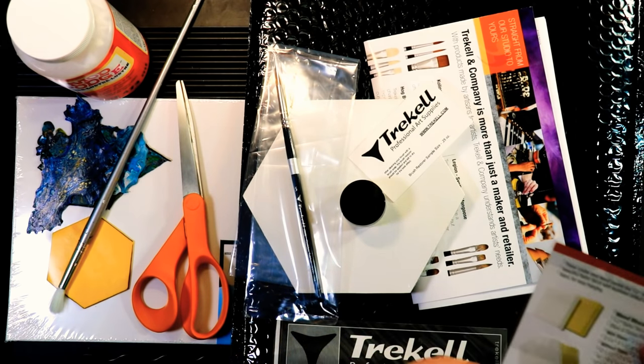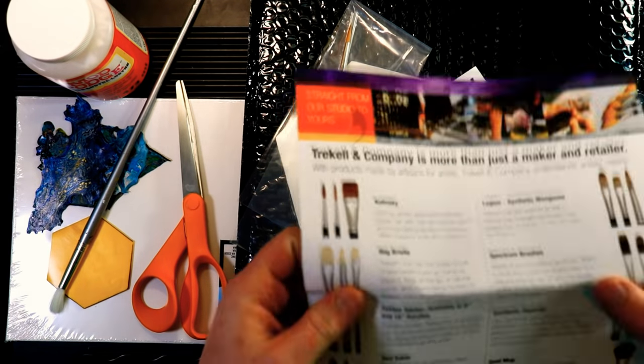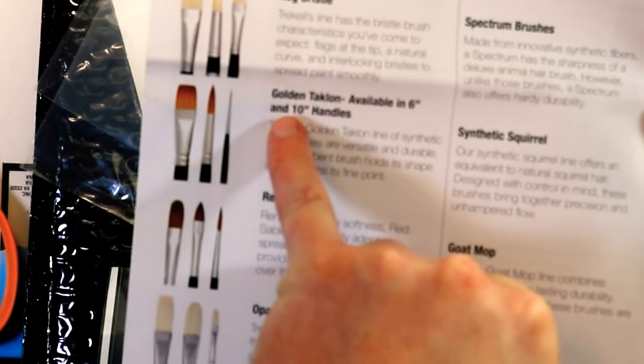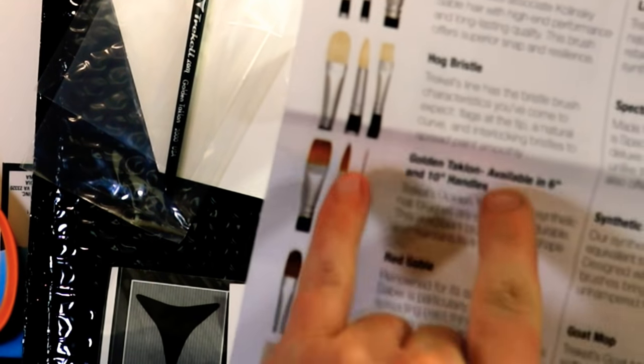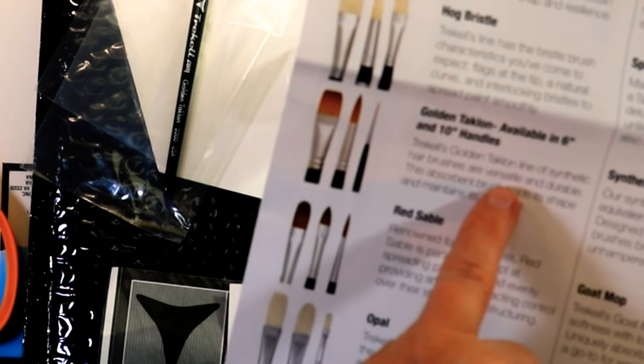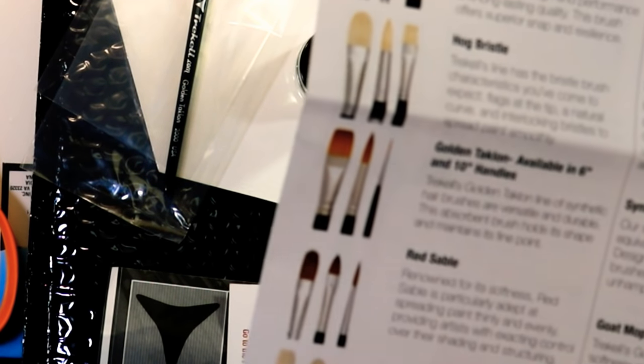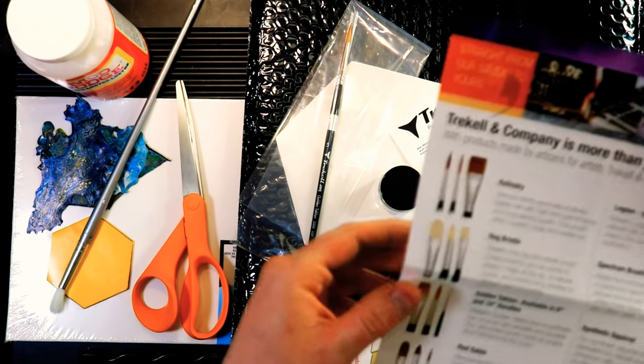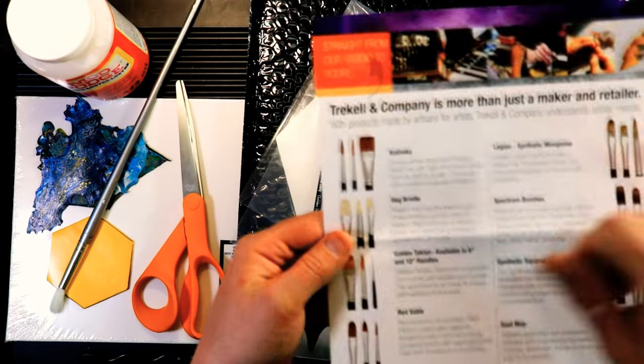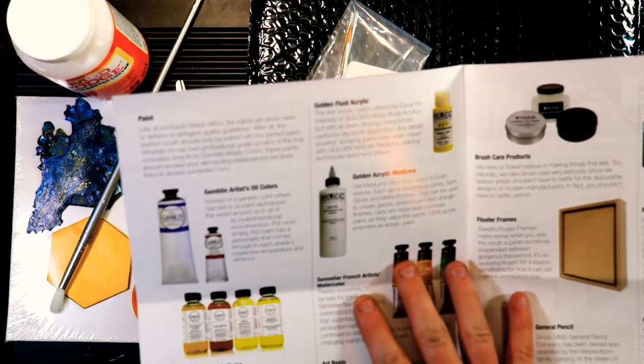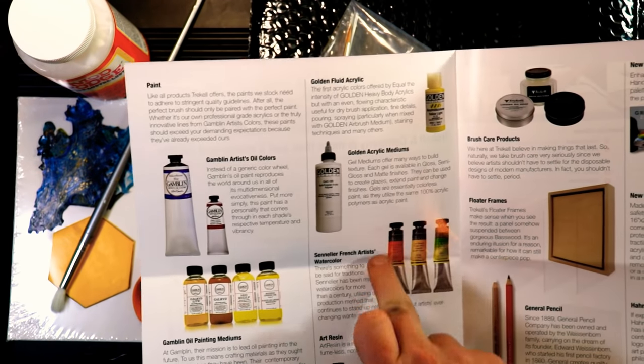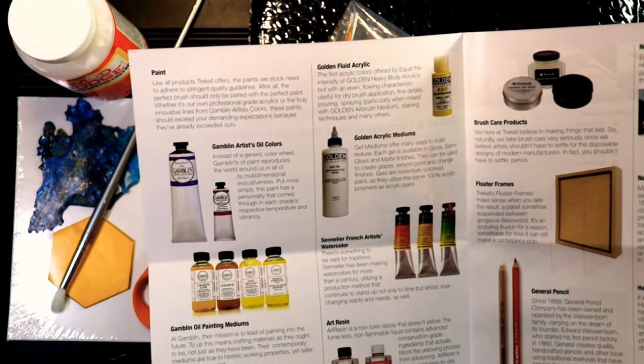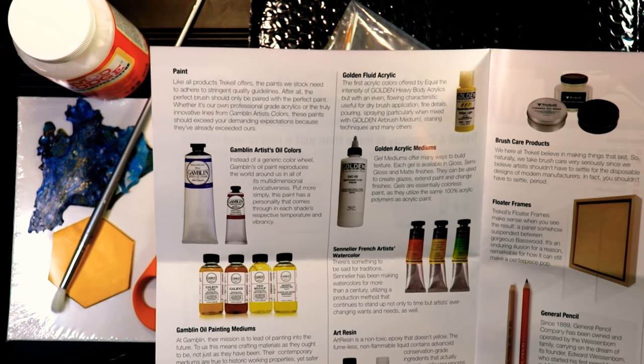And then this brush, which looks like the Golden Taclon, available in six inch to ten inch handles. It looks like it's a synthetic hairbrush, which is versatile and durable. This absorbent brush holds its shape and maintains its fine point. They have a variety of other brushes. They do carry Golden products, which is good. I know a lot of you guys are switching over to the Golden GAC.